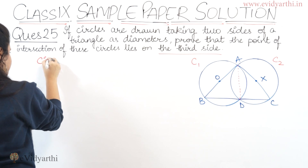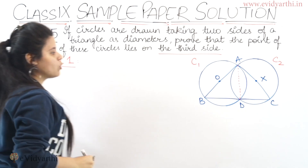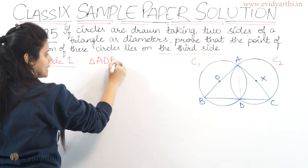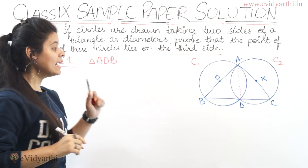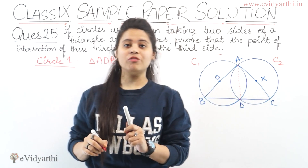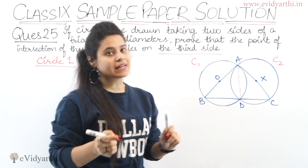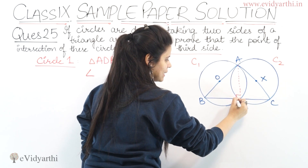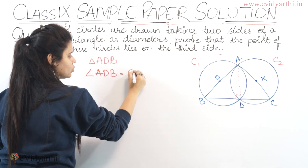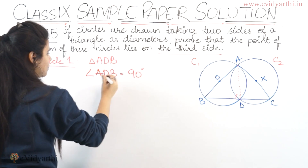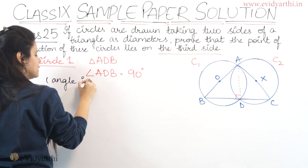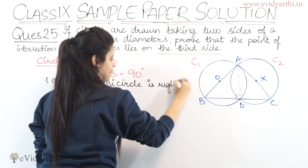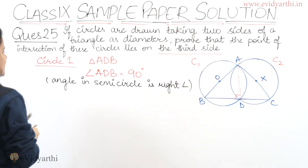In Circle 1, the triangle is ADB. This is a right angle triangle. The reason is that the angle formed in a semicircle is a right angle. So in Circle 1, angle ADB equals 90 degrees — because the angle in a semicircle is always a right angle.